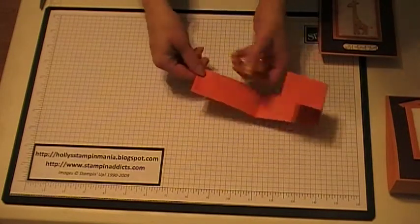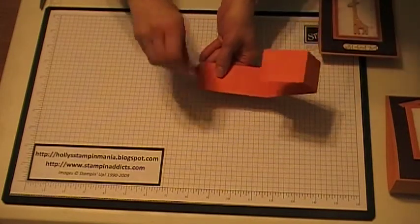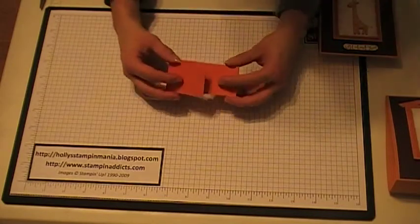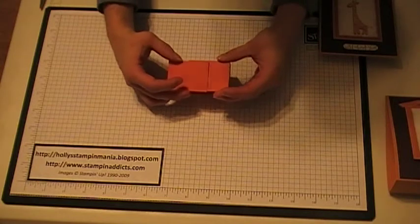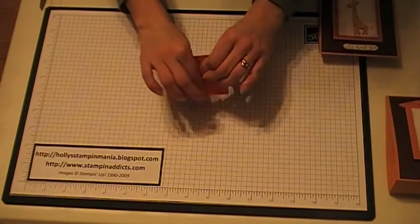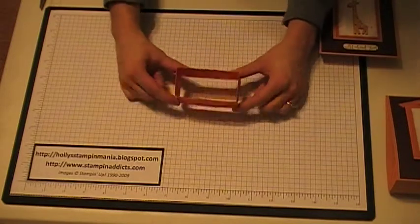I'm just going to peel that off, the backing off. Then you're just going to come in and make a square or a rectangle I should say with the inside piece. So you're going to have that.